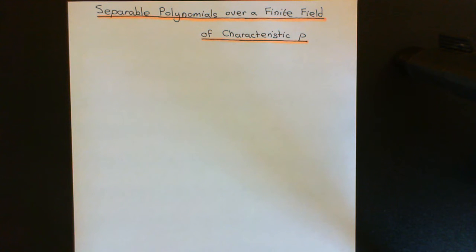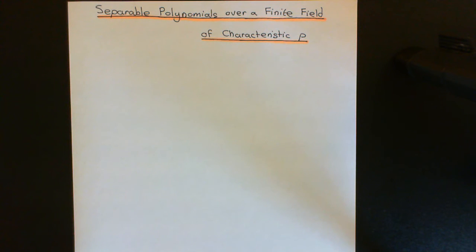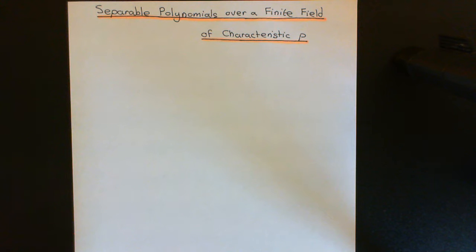Welcome to this next video in the playlist on Field Theory. In this video, what we're going to talk about is separable polynomials over a finite field of characteristic equal to a prime. We're going to do the same thing that we did in the video on separable polynomials over a field of characteristic zero: characterise which polynomials in the ring of polynomials over a finite field of characteristic p are going to be separable and which are not.